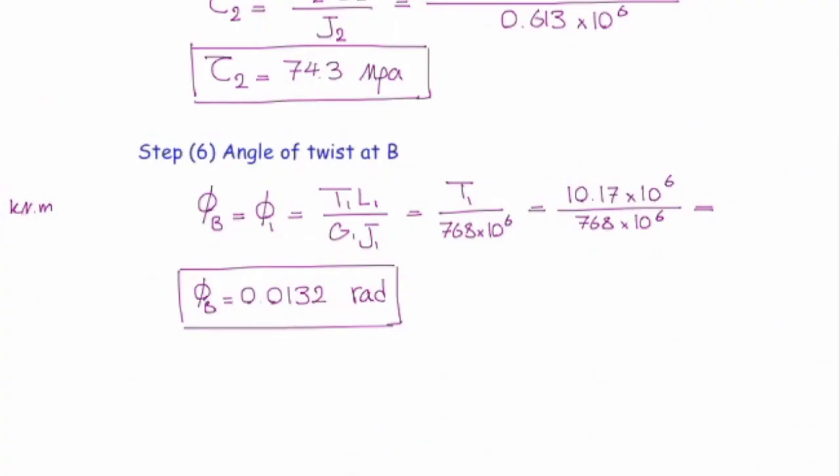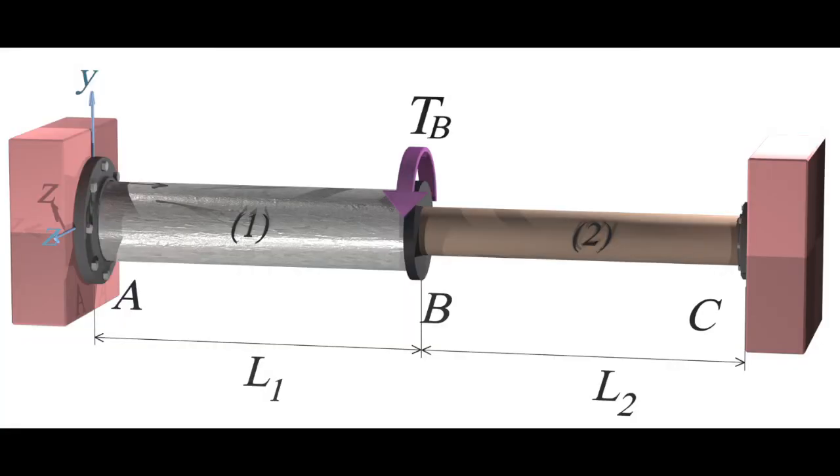Any questions? So, the question is, why we considered phi 1? Why we didn't consider phi 2 in this case? The reason that I considered phi 1 is, look at the problem statement. It says, how much is the relative twist of B relative to A? So, I need to see what connects B to A. In this case, it's shaft number 1.